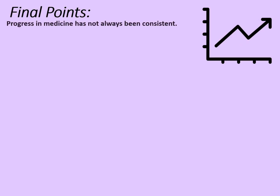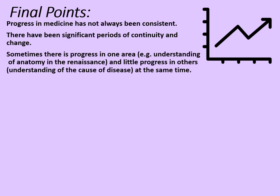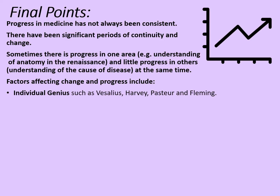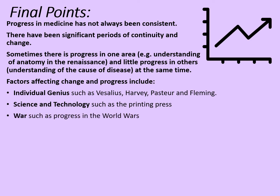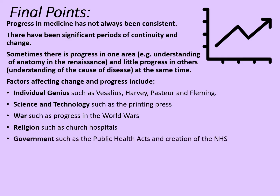Some final points: progress in medicine has not always been consistent — there have been significant periods of continuity and change. Continuity especially during the medieval period, and to a certain extent regarding health into the Renaissance period too. Sometimes there is progress in one area, such as the understanding of anatomy in the Renaissance, and little progress in others, such as the understanding of the cause of disease at the same time. Factors affecting change and progress include individual genius such as Vesalius, Harvey, Pasteur, and Fleming; science and technology such as the printing press; war such as progress made during the World Wars; religion such as church hospitals; government such as the Public Health Acts and the creation of the NHS; and chance and luck such as the discovery of penicillin.